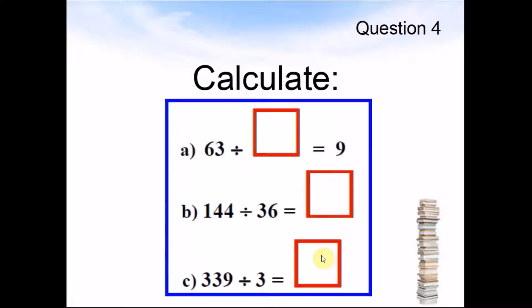Question 4. Calculate: A: 63 divided by something equals 9. B: 144 divided by 36 equals something. C: 339 divided by 3 equals something. Pause the video and work out the answers.